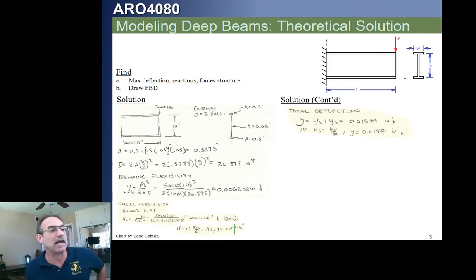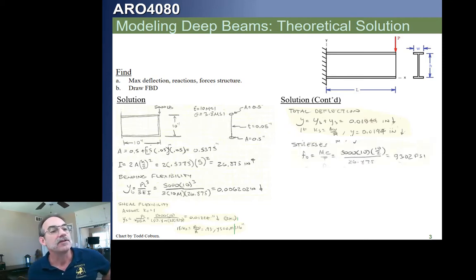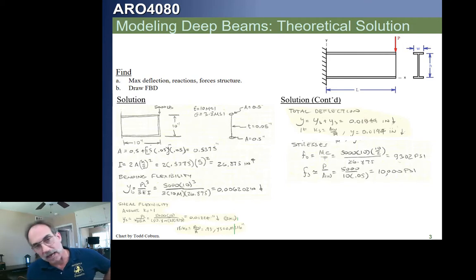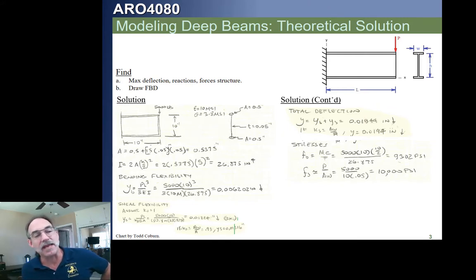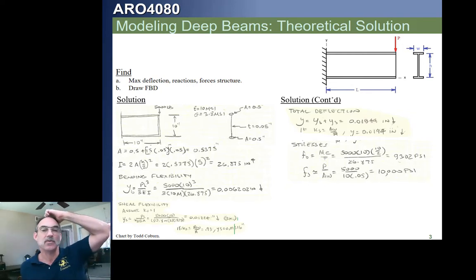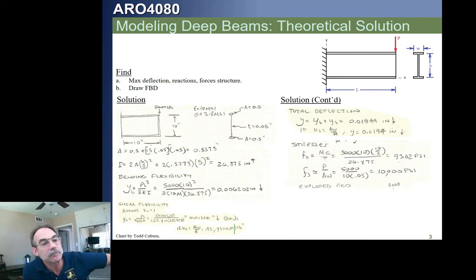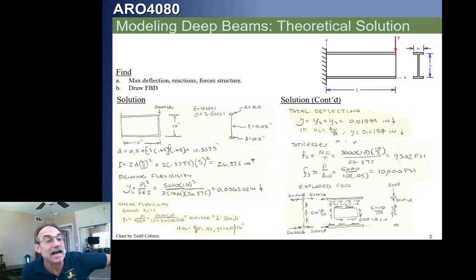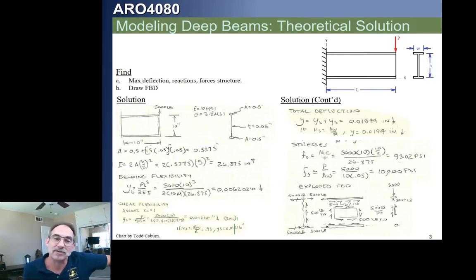The total deflection is about 0.018 to 0.0194 inches, depending on what shear effectivity we assume. Our stresses are calculated simply: MC over I for normal stress, and average shear stress of 5,000 over the area. If we draw an exploded free body diagram, we look at each node and element: the shear flow is that force 5,000 over the depth of the beam, and the force in the rod should be 5,000 at one end and 0 at the other. This would be our exploded free body diagram.